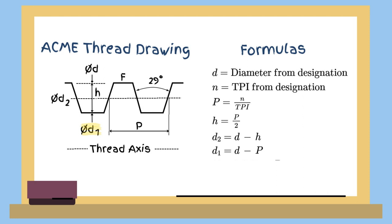And finally, the truncation width, F, equals 0.3707 times the pitch. The formulas for the internal thread are the same. However, the symbols are in capital letters.